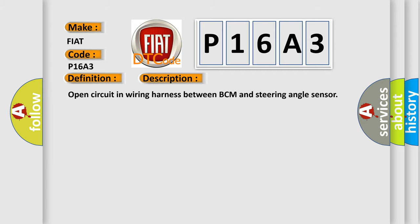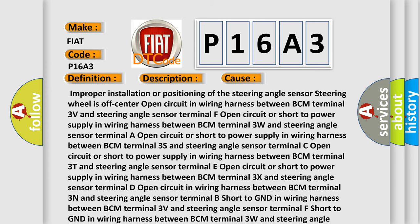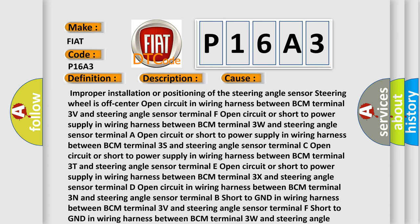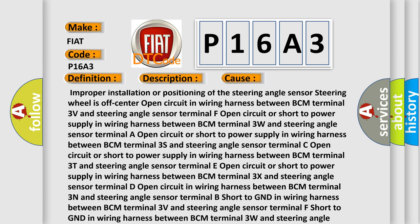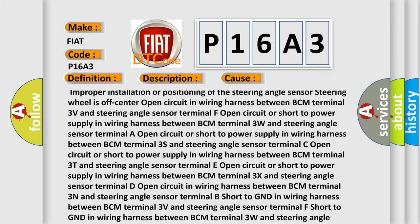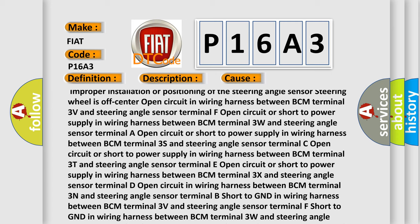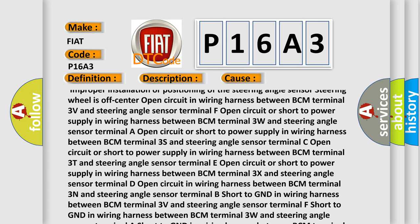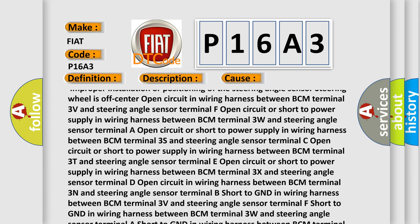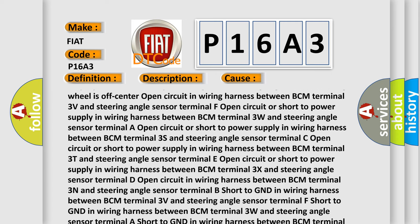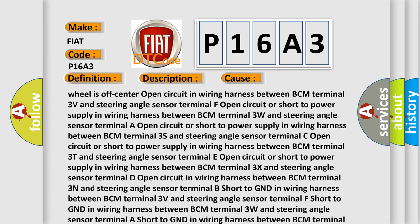Open circuit in wiring harness between BCM and steering angle sensor. This diagnostic error occurs most often in these cases: improper installation or positioning of the steering angle sensor; steering wheel is off center; open circuit in wiring harness between BCM terminal 3V and steering angle sensor terminal F; open circuit or short to power supply between BCM terminal 3S and steering angle sensor terminal C.